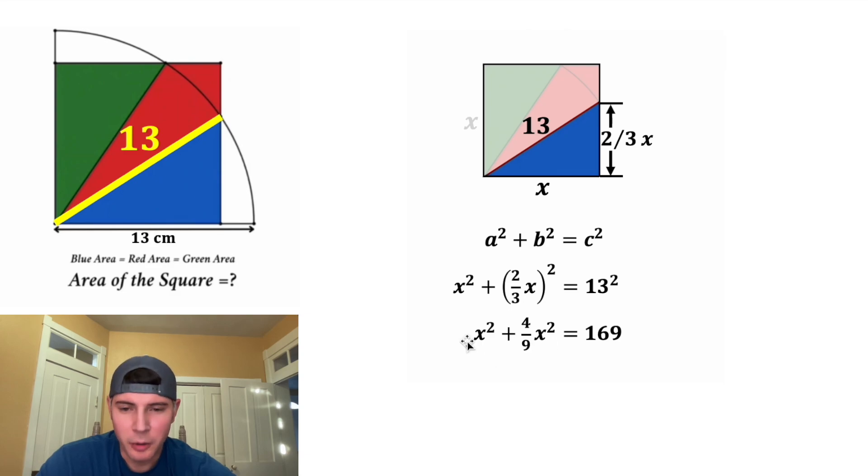And now let's combine like terms. I want to give these a common denominator, so let's multiply the x squared by 9 over 9. So now we're doing 9 ninths plus 4 ninths, which is 13 ninths x squared. And that's still equal to 169.